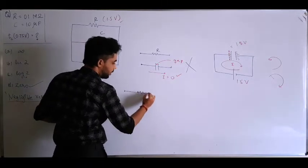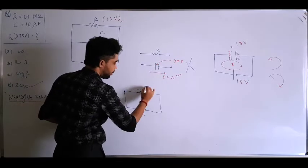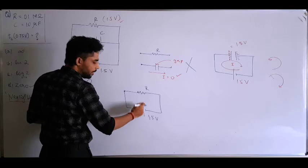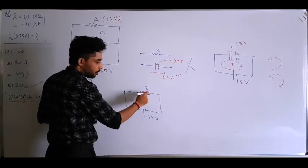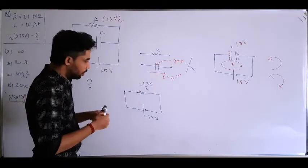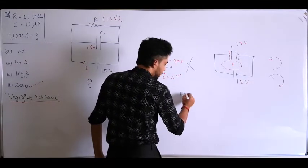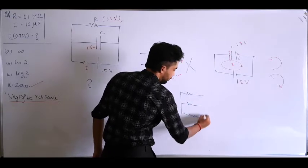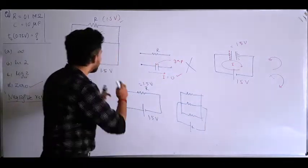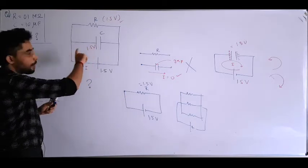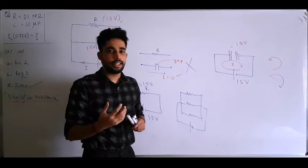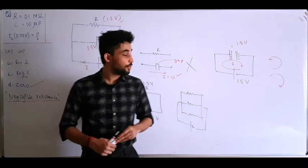Another way to think about this: if you connect a resistor across a 1.5 volt potential, there is no lag or delay — as soon as you connect it, you get a drop of 1.5 volt. This is true for a single resistor or a parallel combination of different resistors. The same logic applies here: even with a capacitor in parallel, the drop happens instantaneously. The capacitor charges instantaneously to its maximum value. So the answer to this question is zero.